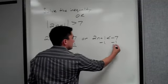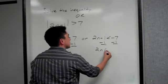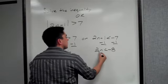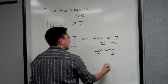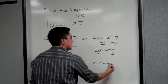Or, subtract 1, you have 2n is less than negative 8, divided by 2, or n is less than negative 4.